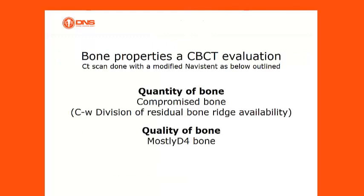Regarding bone properties, a CBCT evaluation was performed. A CT scan was done with a modified Navistent as outlined. The quantity of bone was found to be compromised, with CW division of residual bone ridge availability. The quality of bone was assessed as mostly D4 bone.